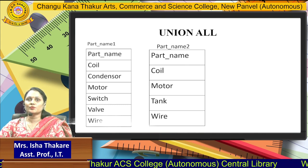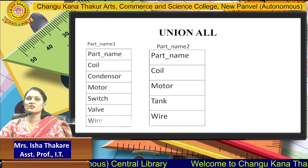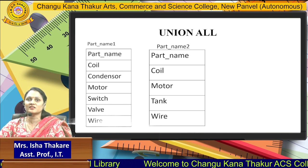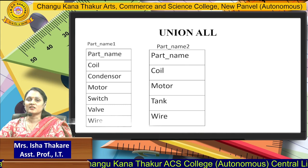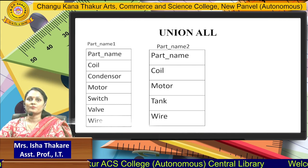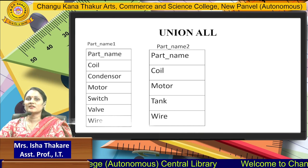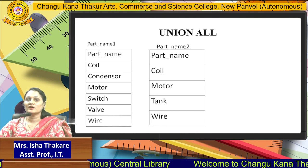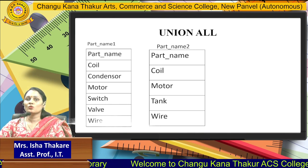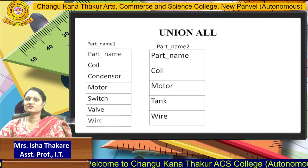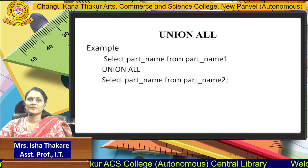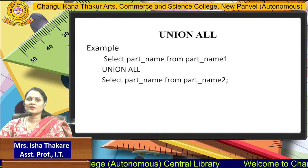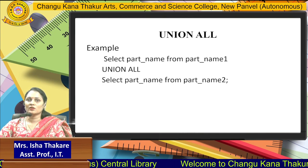The difference between Union and Union All is that in Union, only distinct values are fetched — redundant values are not returned. But in Union All, redundant values are also fetched. The syntax is: SELECT part_name FROM part_name_1, UNION ALL, SELECT part_name FROM part_name_2. So it is the first query Union All the second query.